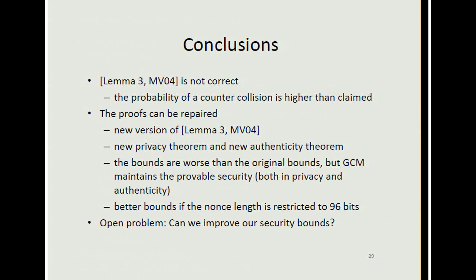To conclude: we have shown that lemma 3 is not correct and the probability of a counter collision is higher than claimed. We showed that the proofs can be repaired, presenting a new version of lemma 3, a new privacy theorem, and a new authenticity theorem. Our bounds are worse than the original bounds but GCM maintains provable security. We also showed it has better bounds if the nonce length is restricted to 96 bits. The open question is whether we can improve our security bounds. Thank you.